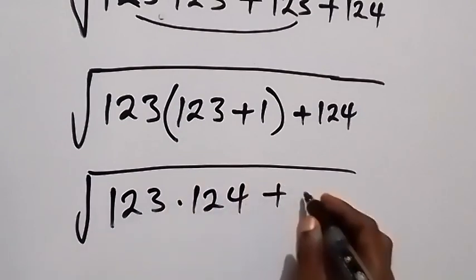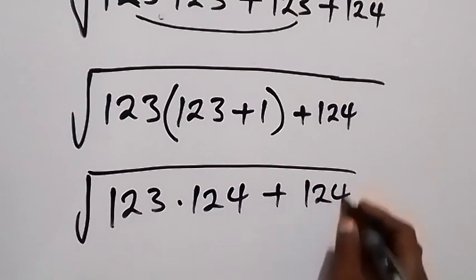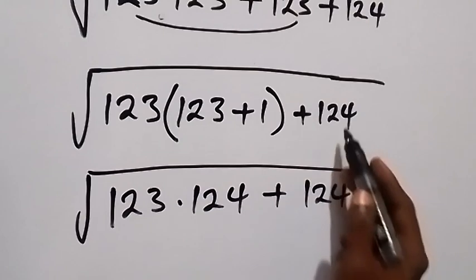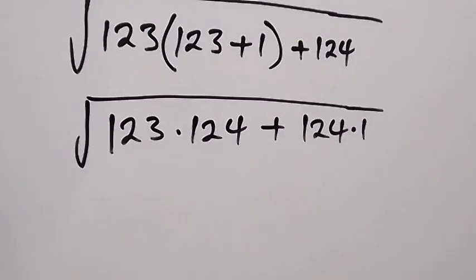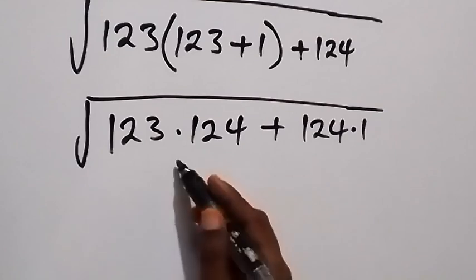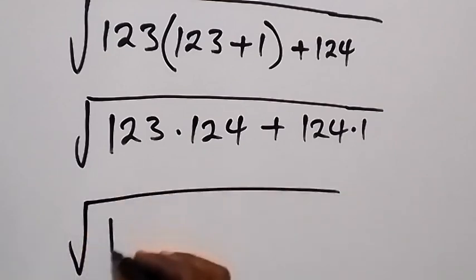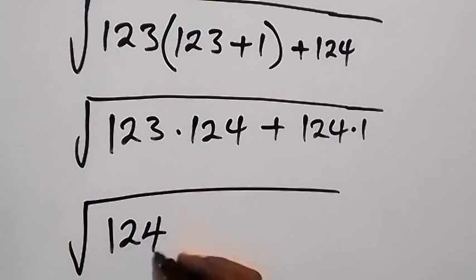Then we can say this is multiplied by 1. 124 is still 124 times 1. Then here as well, we have 124 common. Let's take it out and we have root 124. We factor that out.